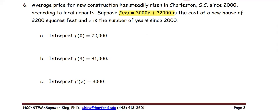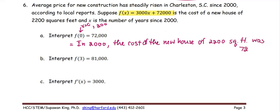In part (a), we interpret f(0) = 72,000. f(0) is a function value when x is 0. x = 0 means the year 2000. 72,000 is the cost of the new house. So we can say that in the year 2000, the average cost, or the cost of the new house of 2200 square feet, was $72,000.